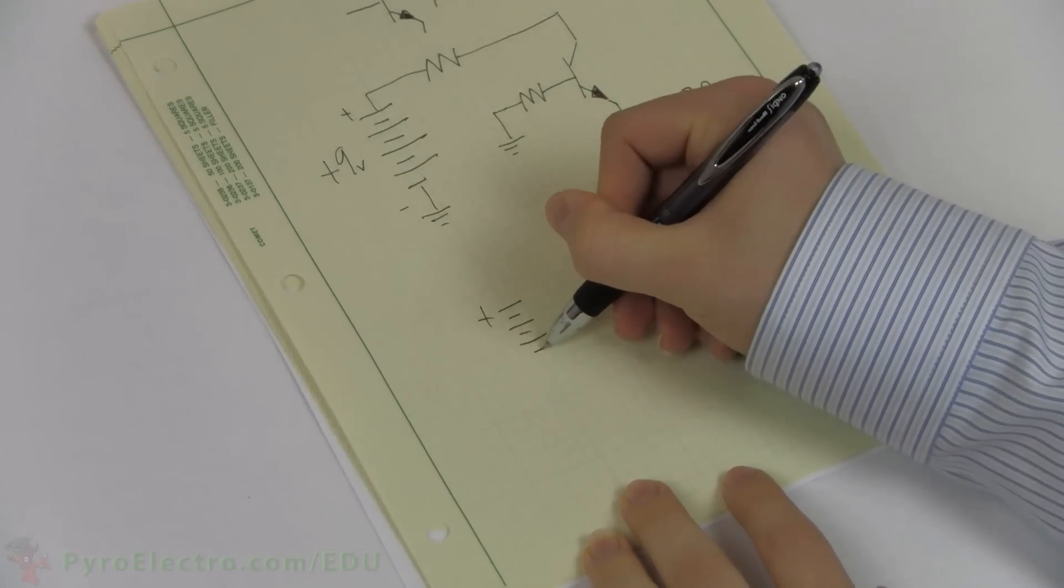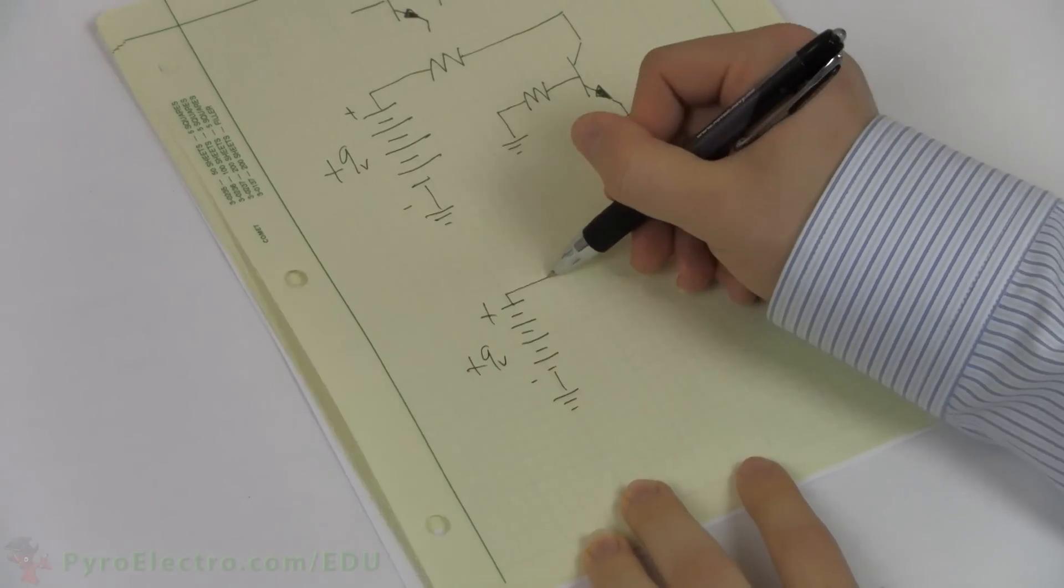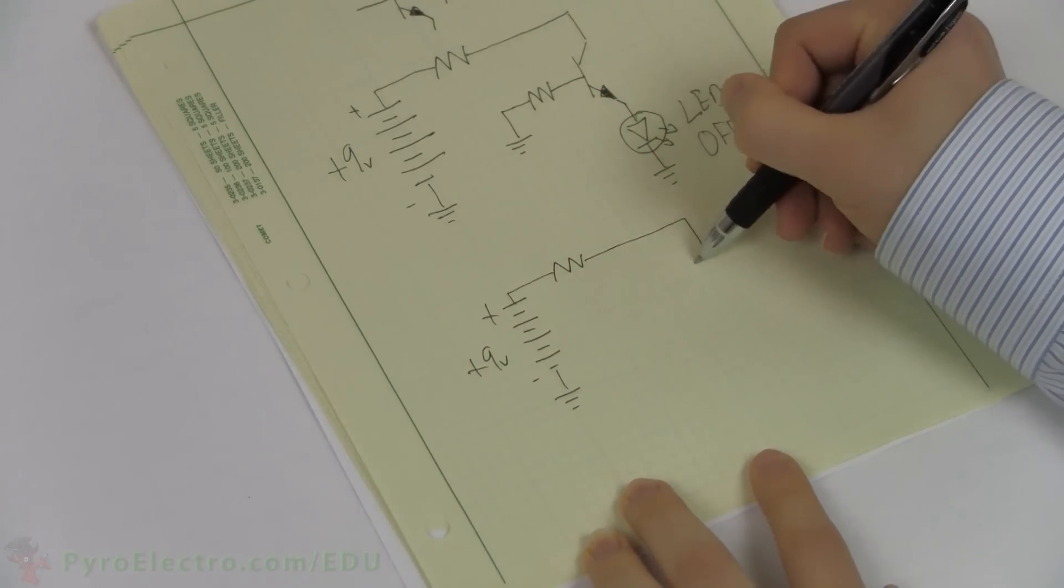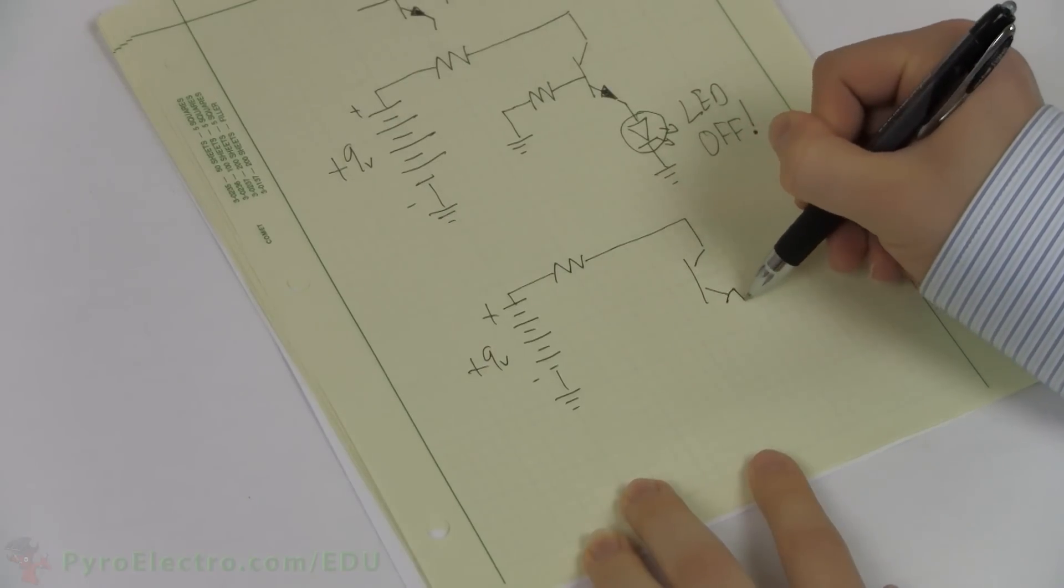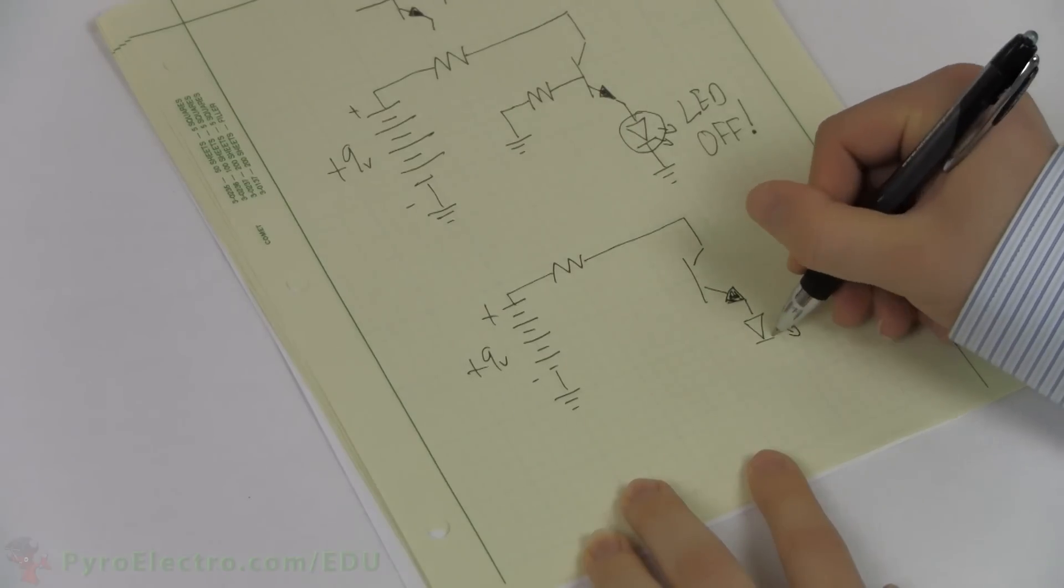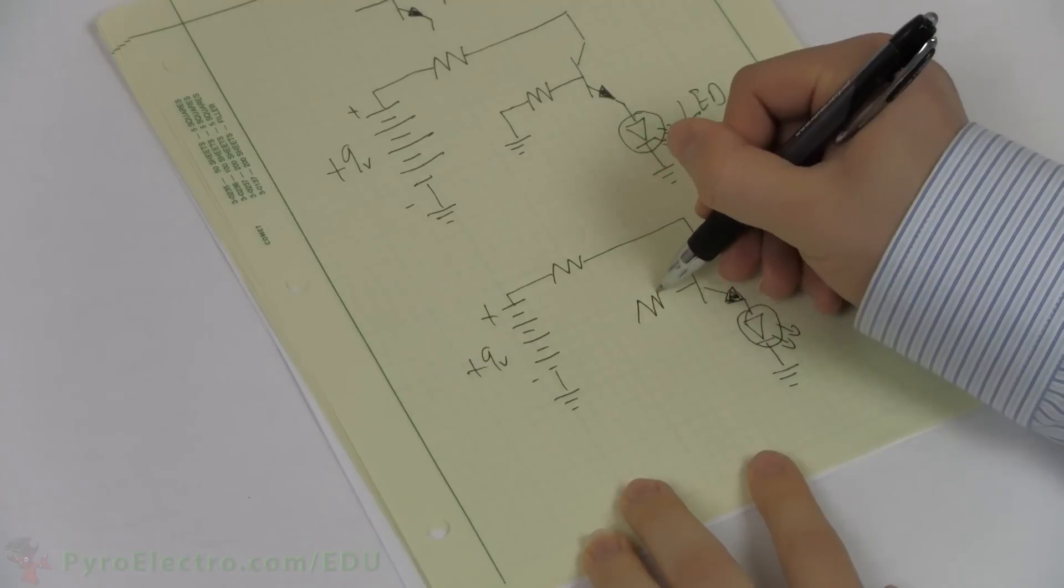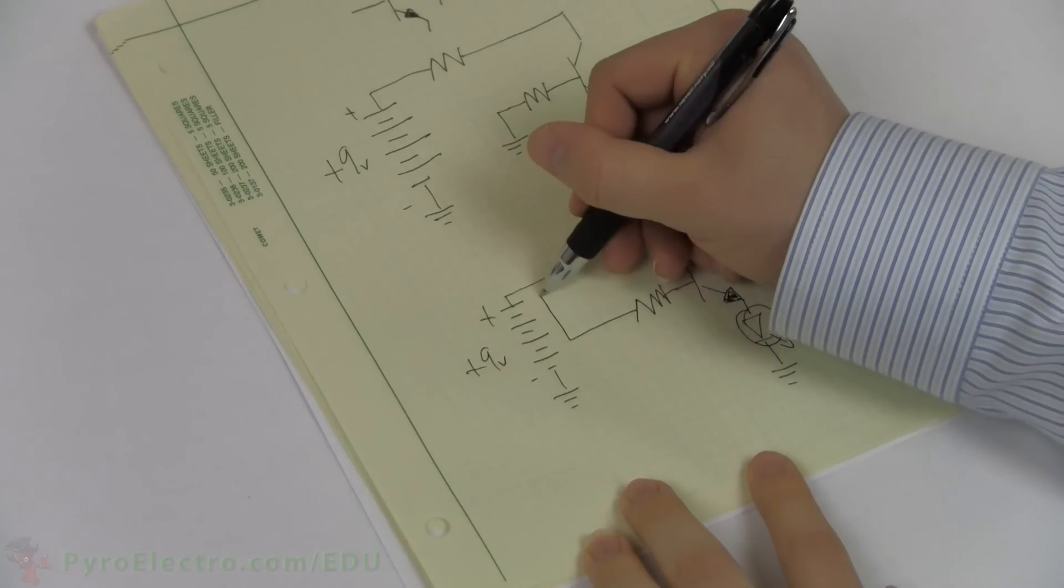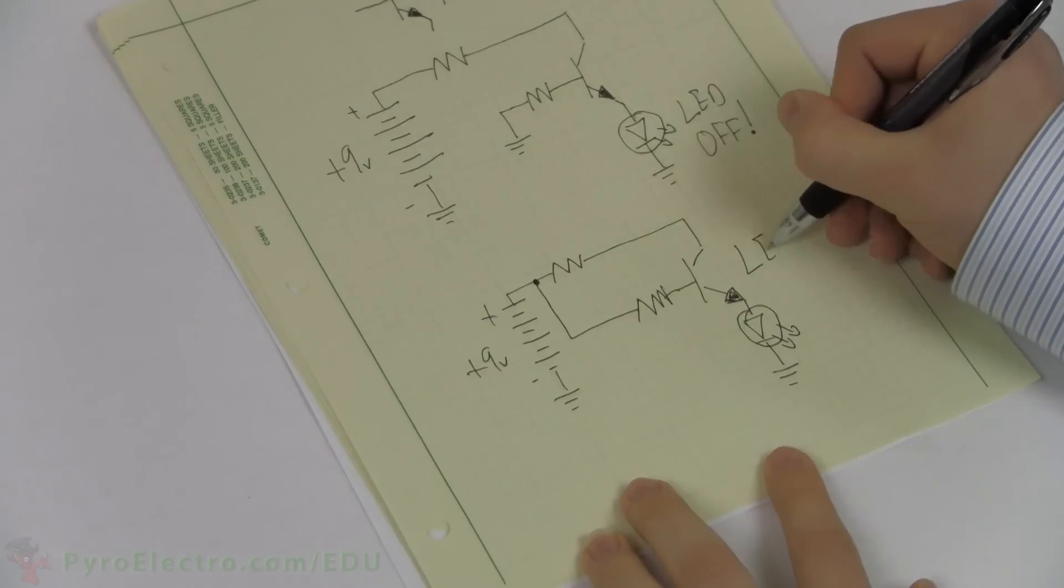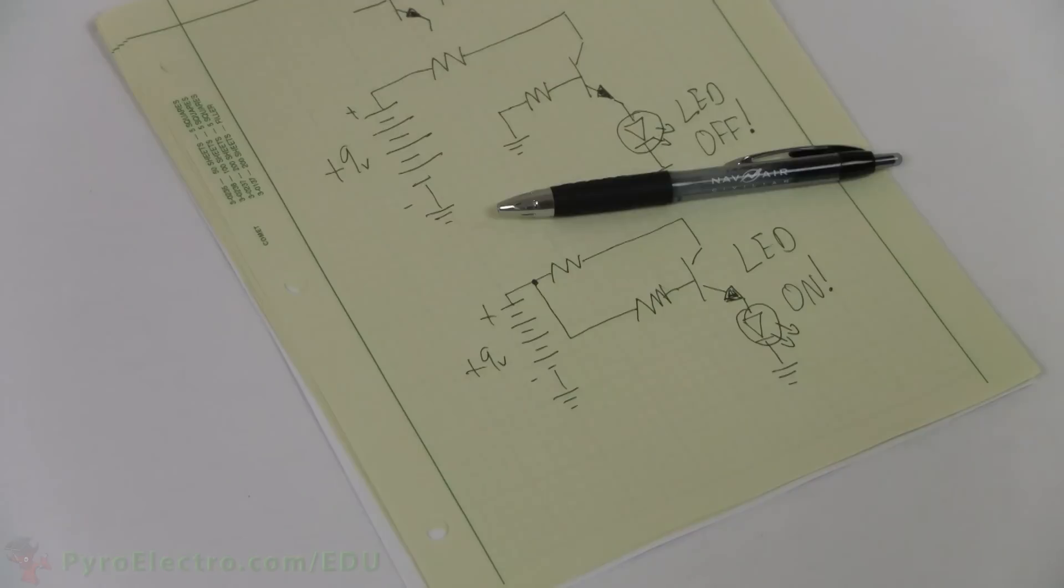Now, let's draw out how we turn the transistor on. Again, we draw the plus 9V battery and the first resistor connecting to the transistor. The LED connects from the transistor to ground. And this time, the second resistor connects the transistor's middle pin to plus 9V power, which turns the transistor, as well as the LED, on. You can start to see how the transistor's middle pin, the base pin, acts just like an on-off switch.